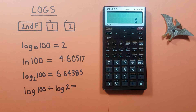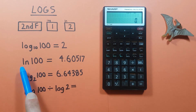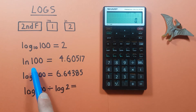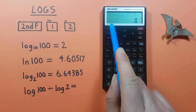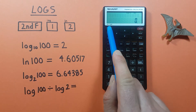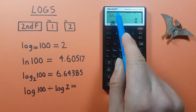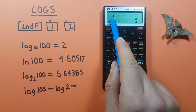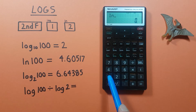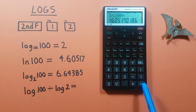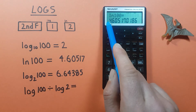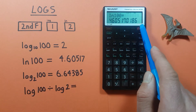We can also do natural log this way. For example, if we wanted to find the natural log of 100, all we would do is press 2nd function 2, which is natural log. We see ln at the top, then enter 100 and press equals. We get 4.605, etc.